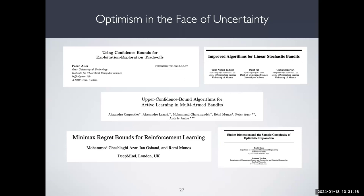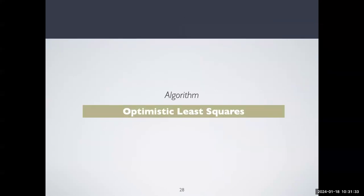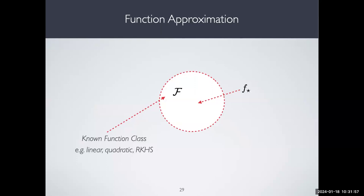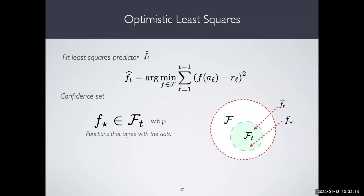Now let's talk about function approximation when we have arbitrary function classes. We'll use something called optimistic least squares — same idea as UCB. In the function approximation regime, we have an arbitrary function class F containing F-star. Given the data the algorithm has collected up to time t, we find the function in F that fits the data best with a square loss. This is what least squares means.